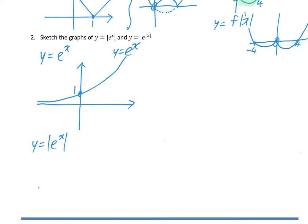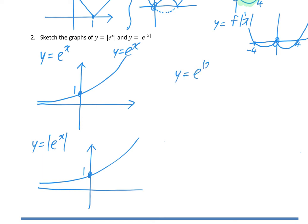So the graph of y = |e^x| is the same as y = e^x — that's just because there's nothing underneath the graph to be reflected vertically. For y = e^(|x|), the right-hand side of the original graph gets reflected over to the left. So we draw the right-hand side of the original graph.